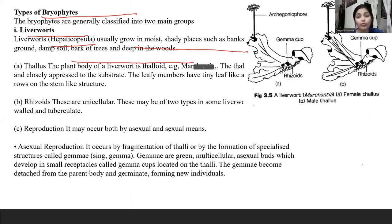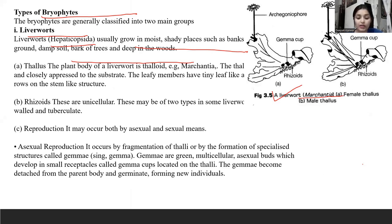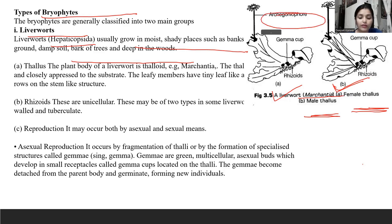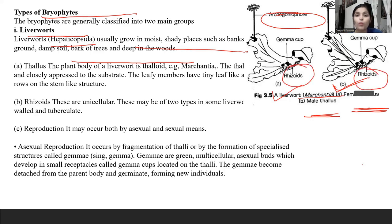You can see this — this is a liverwort. This is a female thallus. The male thallus has a part called the archegonophore. In the male thallus, there is an antheridium. Rhizoids are a root-like structure, and the stalk is large.